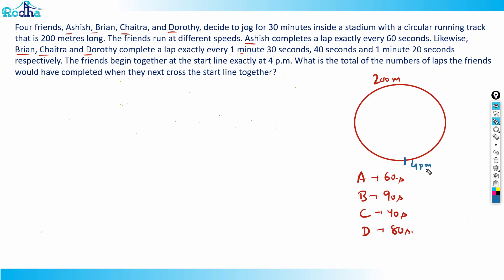I need to take the LCM for this data because A is coming at the starting line every 60 seconds, B every 90 seconds, C every 40 seconds, and D every 80 seconds. For example, A will come at 60, then 120, then 180. B will come at 90, then 180, then 270. They would be again at the start line after the LCM of 60, 90, 40, and 80.